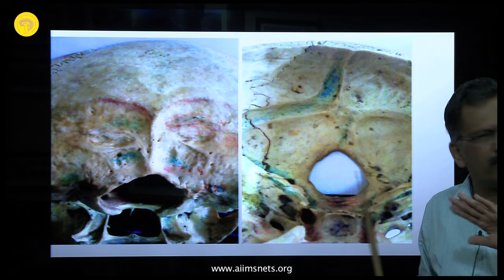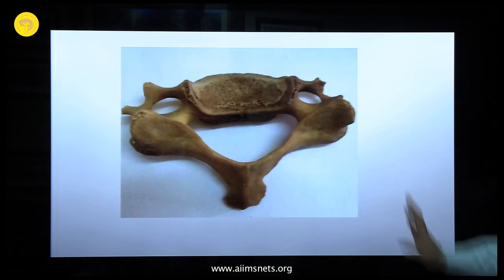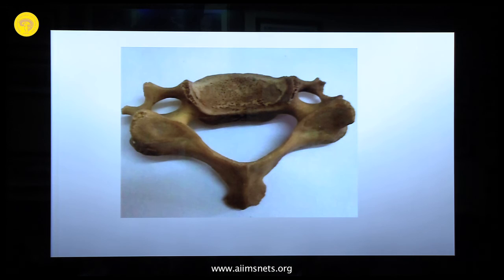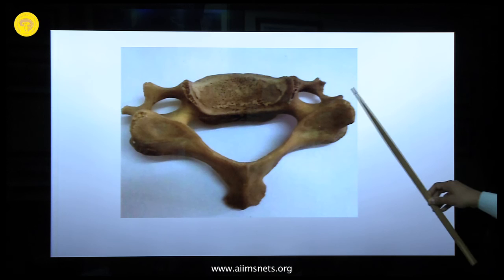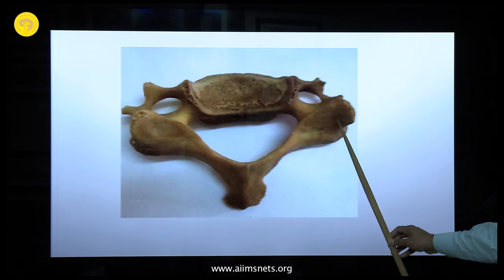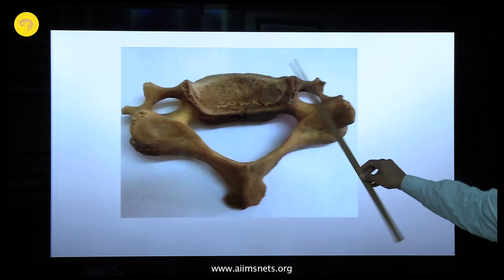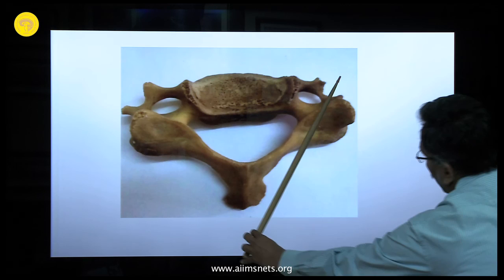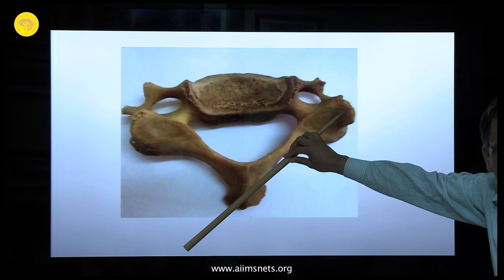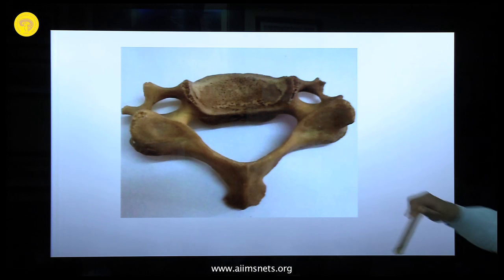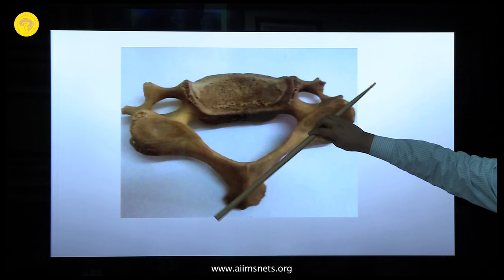Now the subaxial spine, C3 to C6: the foramen transversarium has moved medially and the pedicle is very small here. Rather than going medially, the lateral mass screw trajectory is 15-20 degrees upward and laterally along the lamina. The vertebral artery will never be injured by this — it requires bicortical purchase. So: C1-C2 screws go medially; C3-C6 lateral mass screws go laterally. The vertebral artery will never be injured. Thank you.